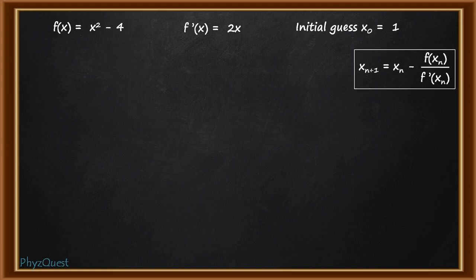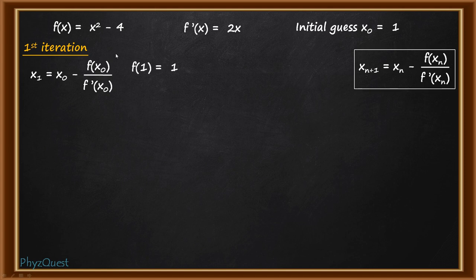The first iteration will be x1 = x0 - f(x0)/f'(x0). As per the x0 is already given as 1, f(x0), that is f(1) will be equal to 1² - 4 = -3 and f'(1) = 2.